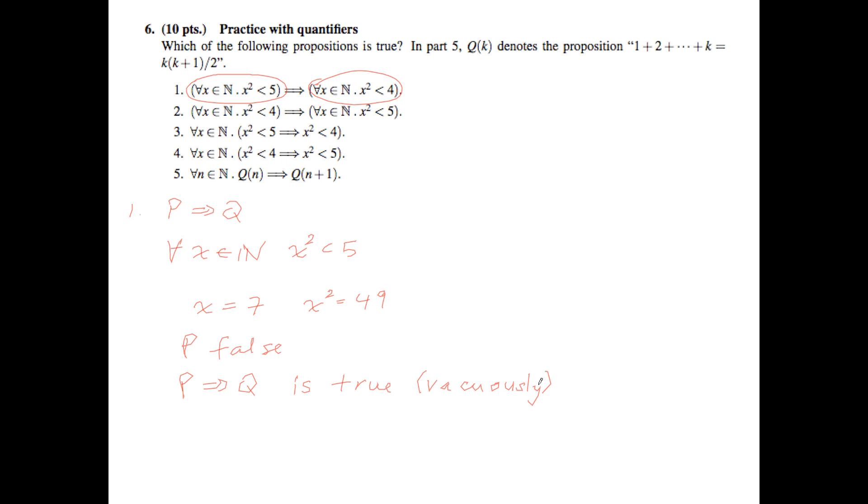This means we didn't really learn anything because P was false, and that's a really boring case. But it's really simple if you're trying to prove whether or not a proposition is true. Because when P is false, you just declare P implies Q is true vacuously and go home.